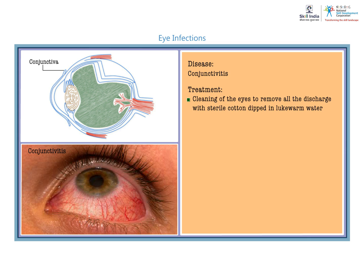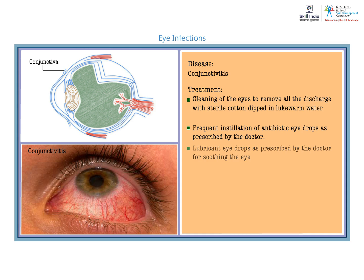Treatment involves cleaning of the eyes to remove all the discharge with sterile cotton dipped in lukewarm water, and frequent installation of antibiotic eye drops as prescribed by the doctor. Lubricant eye drops are also prescribed for soothing the eye. If the patient has fever or pain, oral analgesics are prescribed by the doctor.